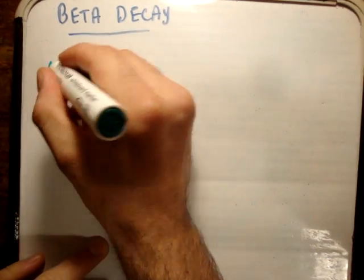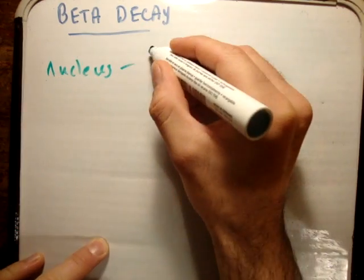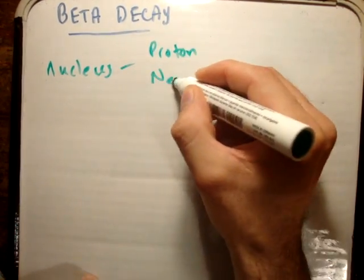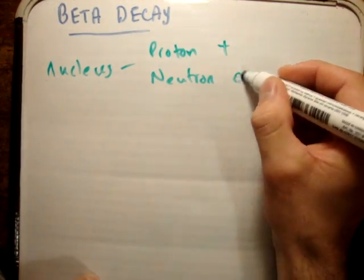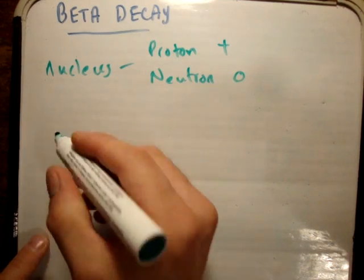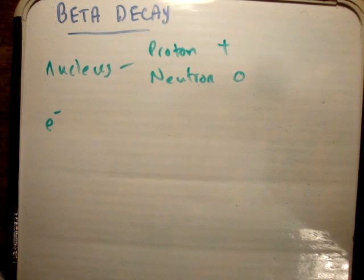So basically, a nucleus consists of protons and it consists of neutrons. And the protons are positively charged, the neutrons are not charged, they're neutral. And orbiting a nucleus we have electrons which are negatively charged. And I spoke about in the fundamentals of nuclear physics, a video which I would suggest you watch.